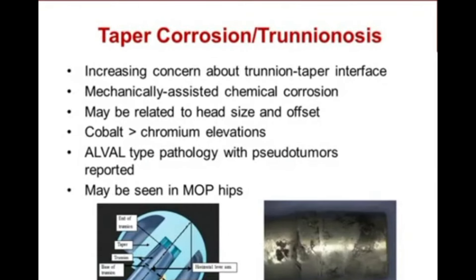Taper corrosion and trunnionosis has received significant attention. Corrosion at the taper modular head junction appears to be a mechanically-assisted chemical corrosive process, related to head size and femoral offset. Cobalt tends to be elevated more than chromium. The result can be ALVAL-type pathology with pseudotumors and local tissue necrosis. This may also be seen in metal-on-polyethylene total hips, so it is not isolated to a specific bearing type. There has been a move toward ceramic hips to alleviate some of these concerns.